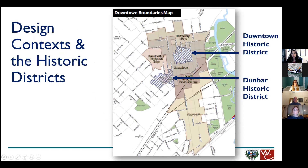In and around our downtown context boundary, we also have two historic districts. The first is the Downtown Historic District surrounding the courthouse, which is actually outside our downtown context boundary shown with blue hash marks. The second is the Dunbar Historic District, which overlaps some of the downtown context area. These historic districts have their own unique regulations, so for this project we won't specifically address the historic regulations, but we will be drawing from the historic design traditions of those areas.